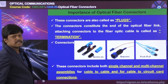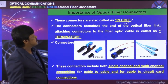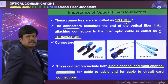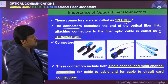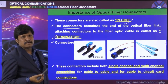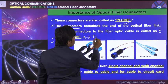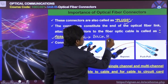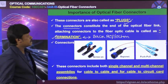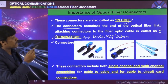These connectors are also called as plugs. They constitute the end of the optical fiber link. Attaching connectors to the fiber optic cable is called termination. Termination is very important at the end of the optical communication link to terminate the ports and to reduce back reflection. The connectors constitute the end of the optical fiber link.